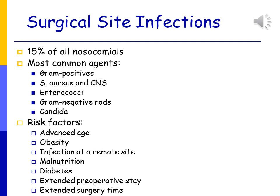Surgical site infections are 15% of all nosocomial infections. The most common agents are gram-positive organisms including Staphylococcus aureus, coagulase-negative staph, and Enterococcus, as well as gram-negative rods and Candida yeast. Risk factors include advanced age, obesity, infection at a remote site, malnutrition, diabetes, an extended preoperative stay, and an extended surgery time.